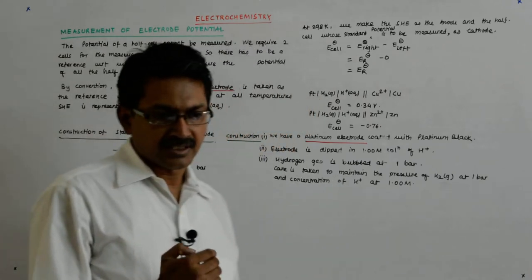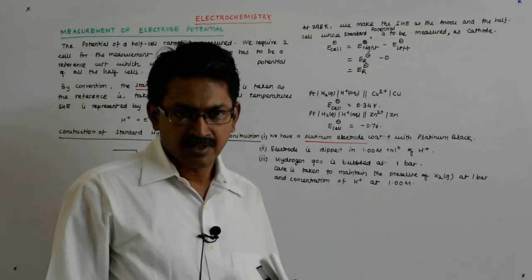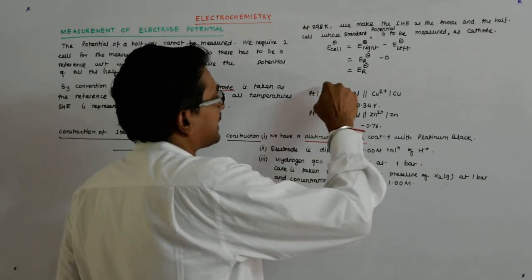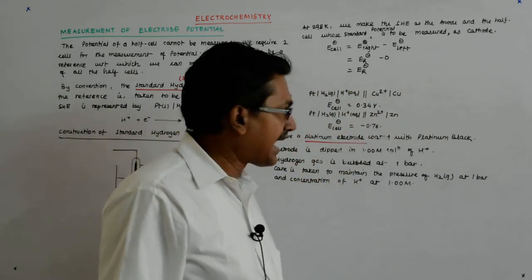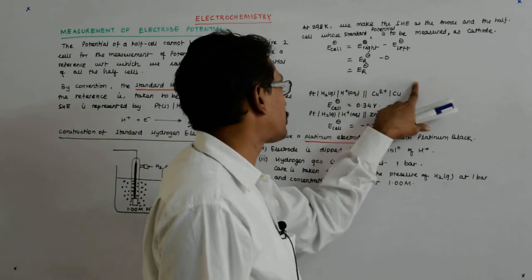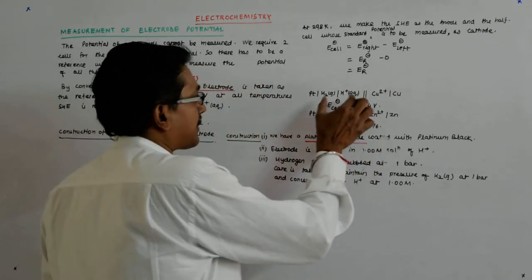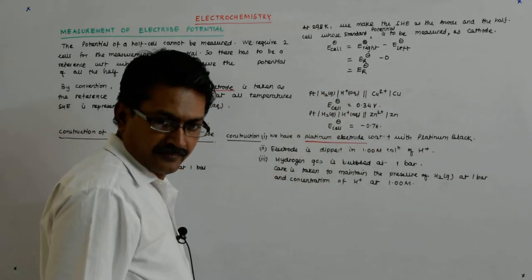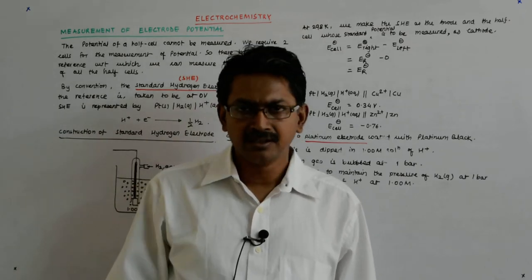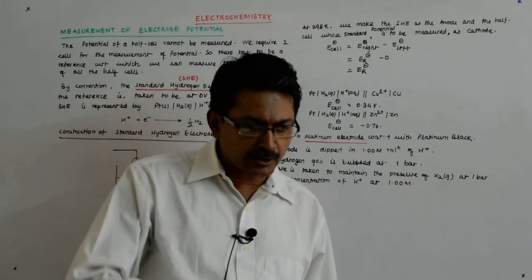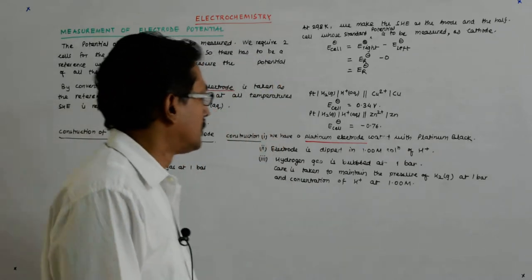What happens if there is H₂ and H⁺ and you dip copper in that? The tendency of hydrogen will be to become H⁺, and what will it do? It will reduce copper ion to copper. That means H⁺ can reduce copper — and this has implications.